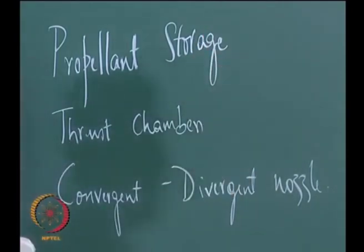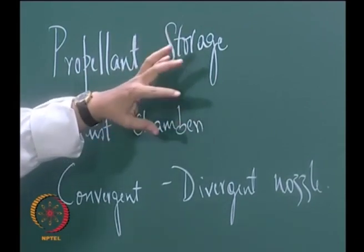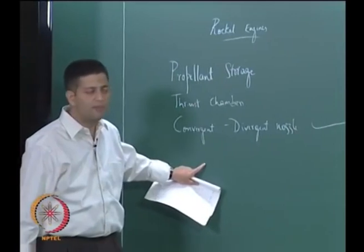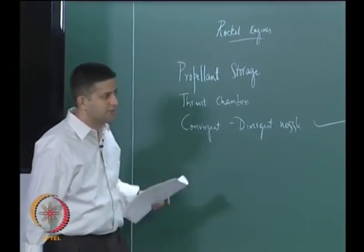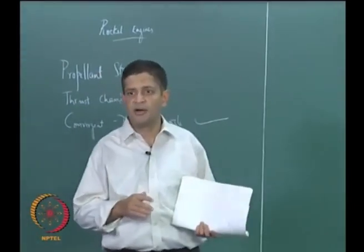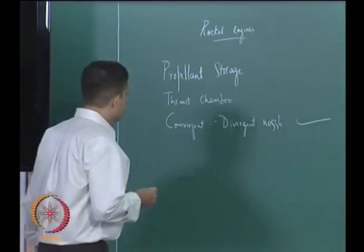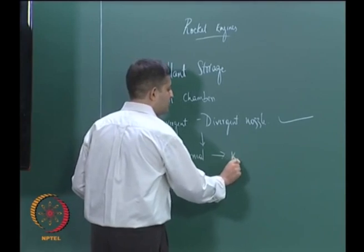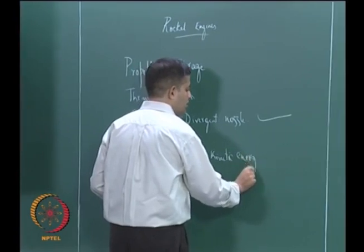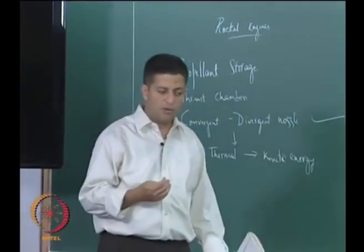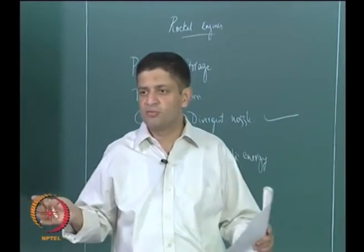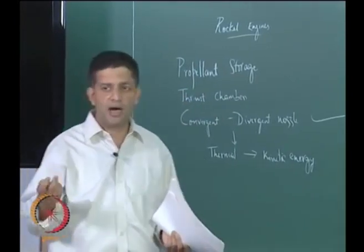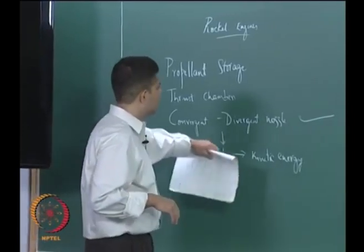In the solid rocket, both the propellant storage and thrust chamber are in the same physical location, whereas in liquids and hybrids, all three of them are separate. But one thing common to all of them is the nozzle part. In the nozzle, the thermal energy released because of chemical reactions is converted into kinetic energy. So, in the nozzle you have thermal to kinetic energy conversion, and as this is common to all three kinds of rockets, we can study them exclusively without paying attention to what kind of rocket it is.